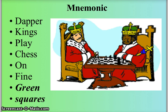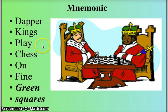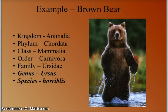To remember the order of the taxa, we use the mnemonic: dapper kings play chess on fine green squares. Dapper — D for domain. Kings — K for kingdom. Play — P for phylum. Chess — C for class. On — O for order. Fine — F for family. Green — G for genus. And squares — S for species. So to remember domain, kingdom, phylum, class, order, family, genus, and species: dapper kings play chess on fine green squares.